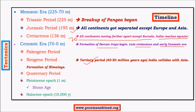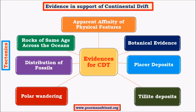Now let us look at evidences and their criticism. The major evidences suggested by Wegener in support of continental drift theory are: affinity of physical features, botanical and fossil evidences, placer deposits (gold deposits), tillite deposits (sedimentary deposits left after glaciation in Gondwana land), polar wandering, and rocks or mountains of the same age found across different continents. We will see them in detail.